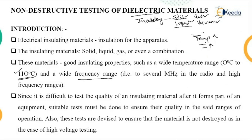Since it is difficult to test the quality of an insulating material after it forms part of equipment, suitable tests must be done to ensure quality in the said range of operation. Just like when we purchase any material we test it for pressure, temperature, or voltage, similarly insulating material to be used in a power system must be tested. These tests are devised to ensure that the material is not destroyed, as in the case of high voltage testing.